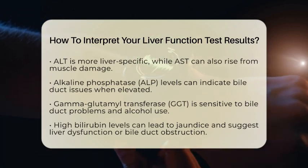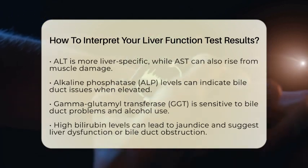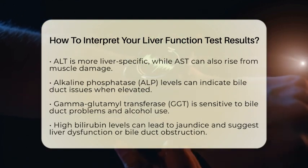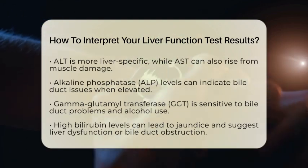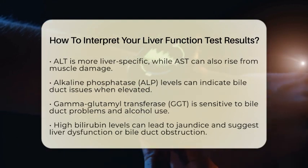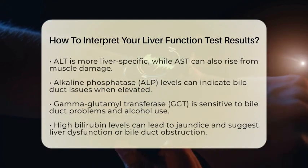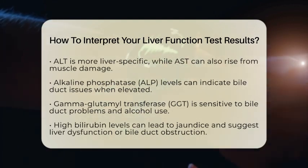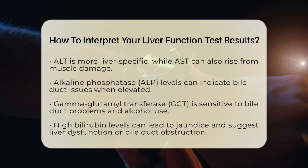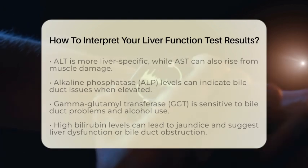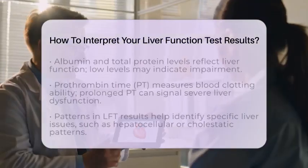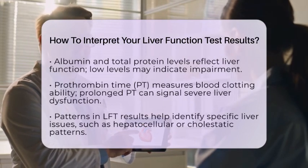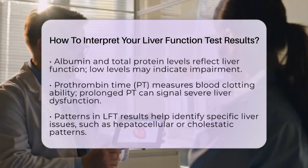When interpreting your LFT results, it's essential to look at the pattern and degree of any abnormalities. A hepatocellular pattern, marked by elevated ALT and AST, often points to liver cell injury from conditions like viral hepatitis, alcohol-related liver disease, or even liver cancer. Further testing may be necessary to determine the exact cause.